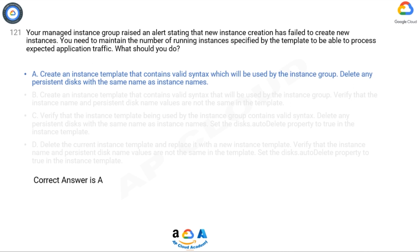Option C suggests verifying the instance template syntax and deleting persistent disks with the same name as instance names, but does not mention creating a new instance template with valid syntax. It is crucial to ensure that the instance template itself has valid syntax to avoid errors during instance creation. Option D suggests deleting the current instance template and replacing it with a new one, which is not necessary unless there is an issue with the template itself. It lacks the instruction to delete any persistent disks with the same name as instance names. In summary, Option A is the correct answer as it covers both necessary steps of creating an instance template with valid syntax and deleting conflicting persistent disks.